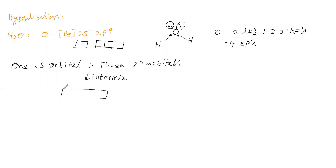How many hybrid orbitals are formed? As many atomic orbitals as are undergoing intermixing, that many hybrid orbitals will be formed. So 4 atomic orbitals are forming 4 hybrid orbitals. The name of the hybrid orbital is sp³ because 1s and 3p. Therefore, each hybrid orbital name is sp³.